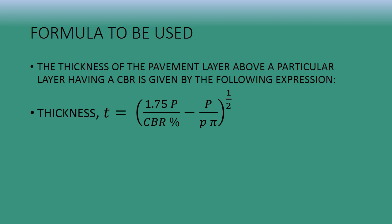The thickness T is given by: T = 1.75 × √(P / CBR% + P / p), where capital P represents the wheel load in kilograms and small p represents tire pressure in kilogram per centimeter square. We will use this formula to find out the thickness of each pavement layer.